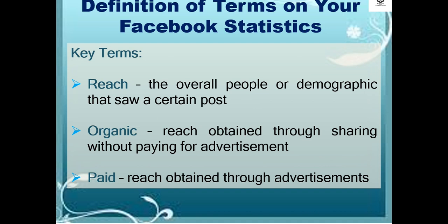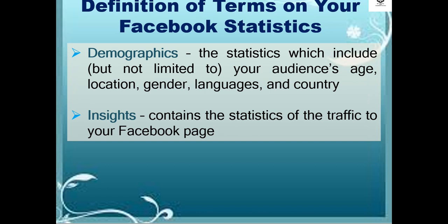Some important key terms are the following. Reach: the overall people or demographic that saw a certain post. Organic: reach obtained through sharing without paying for advertisement. Paid: reach obtained through advertisements. Demographics: statistics which include, but are not limited to, your audience's age, location, gender, languages, and country. Insights: contains the statistics about the happenings on your Facebook page.